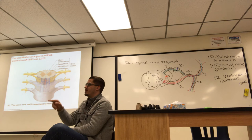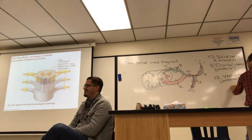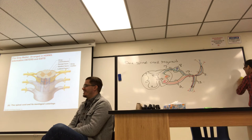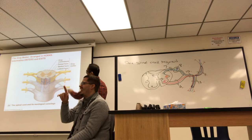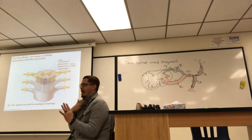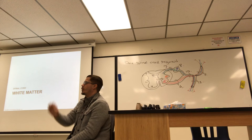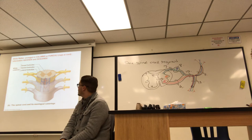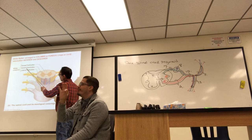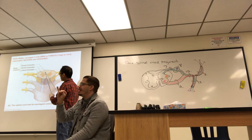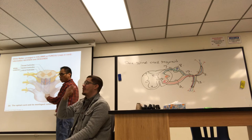Now for the white matter: the figure points to columns of white matter. The white matter is arranged into columns — technically called funiculi, though 'column' is easier. There is the dorsal column, the ventral column, and the lateral column.